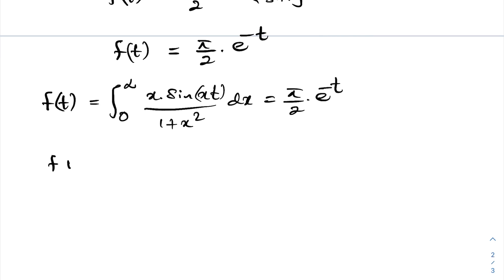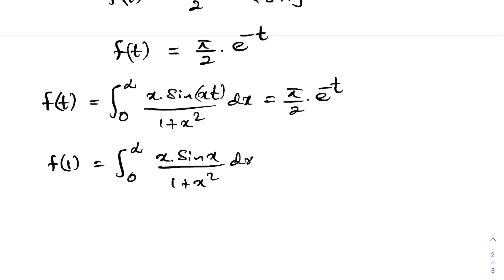Now let's plug in t equals one. f(1) equals the integral from zero to infinity of x times sine of x over one plus x squared dx, and this equals pi over two times e to the minus one, which we can write as pi over two times e. So the answer to this integral is pi over 2e, solved using the Laplace transform. Thank you for watching.